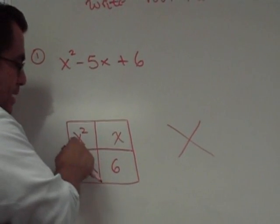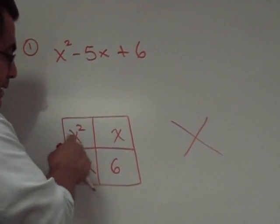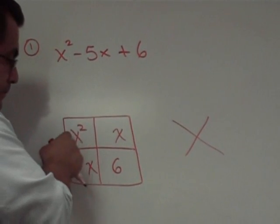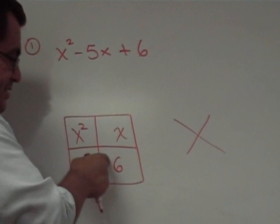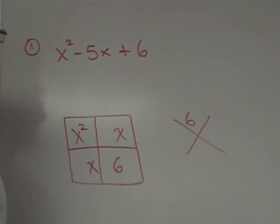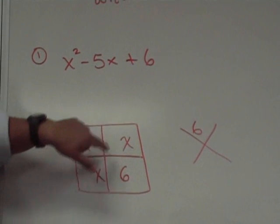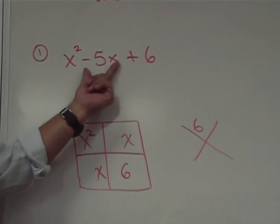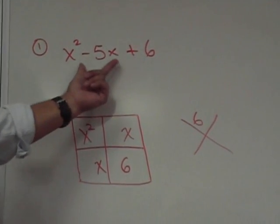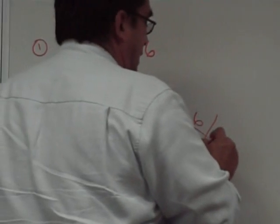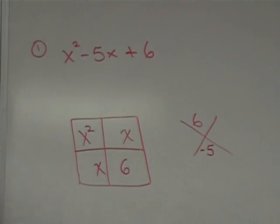So, we do a quick X game here. Only the numbers, we don't worry about the X's. The X's will take care of themselves. It's the coefficients. I have a 6 and a 1 right here. 6 times 1 is 6. The product of these two numbers is 6. Then I need this product to be 6. And the sum of these two numbers has to be negative 5. Now, your job is to find the solution to this X game.